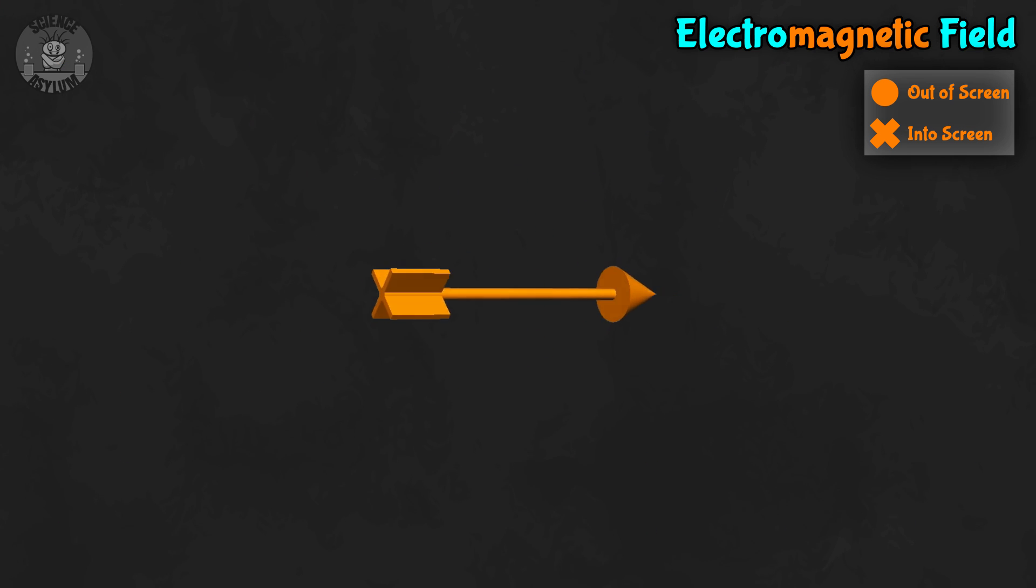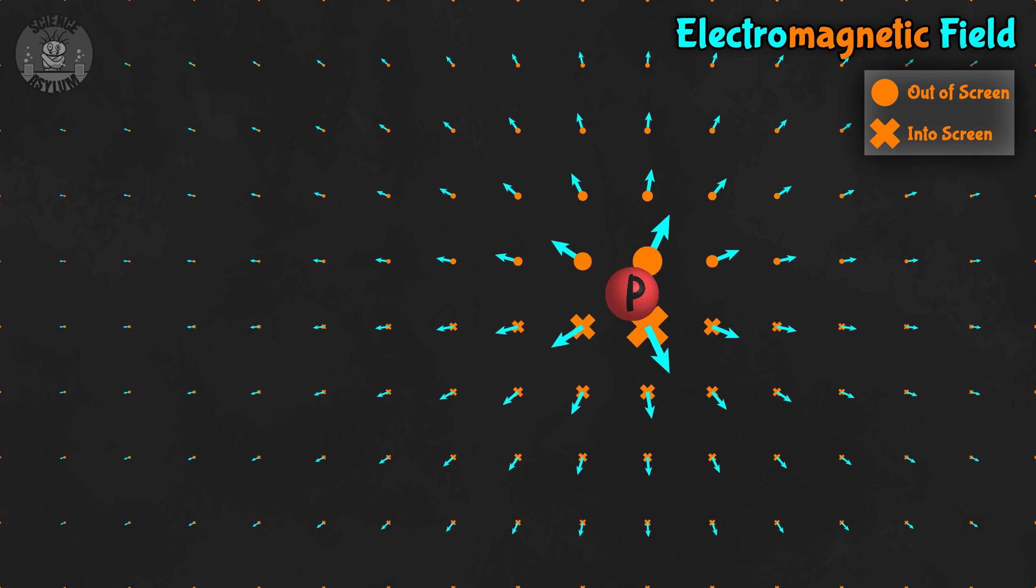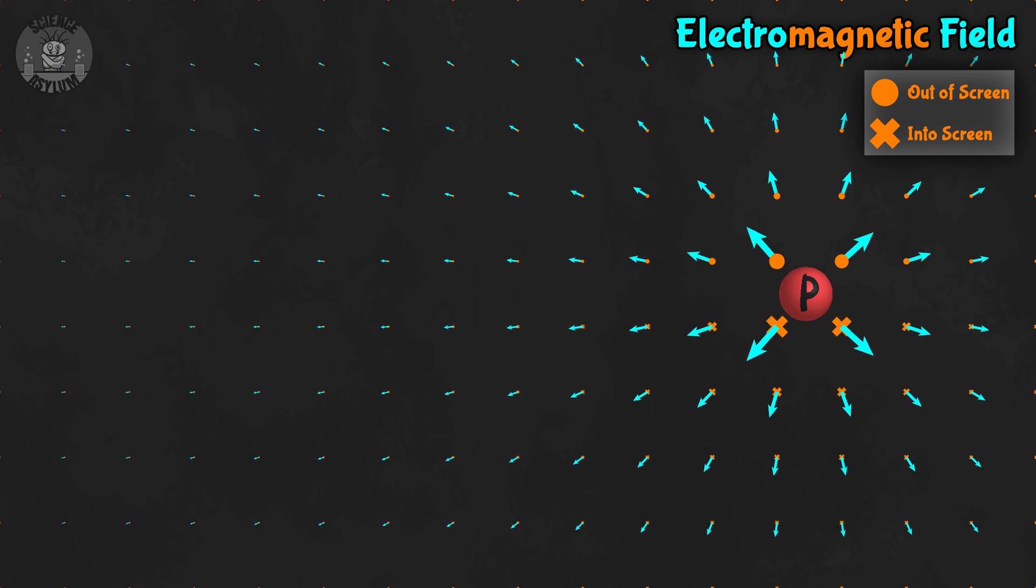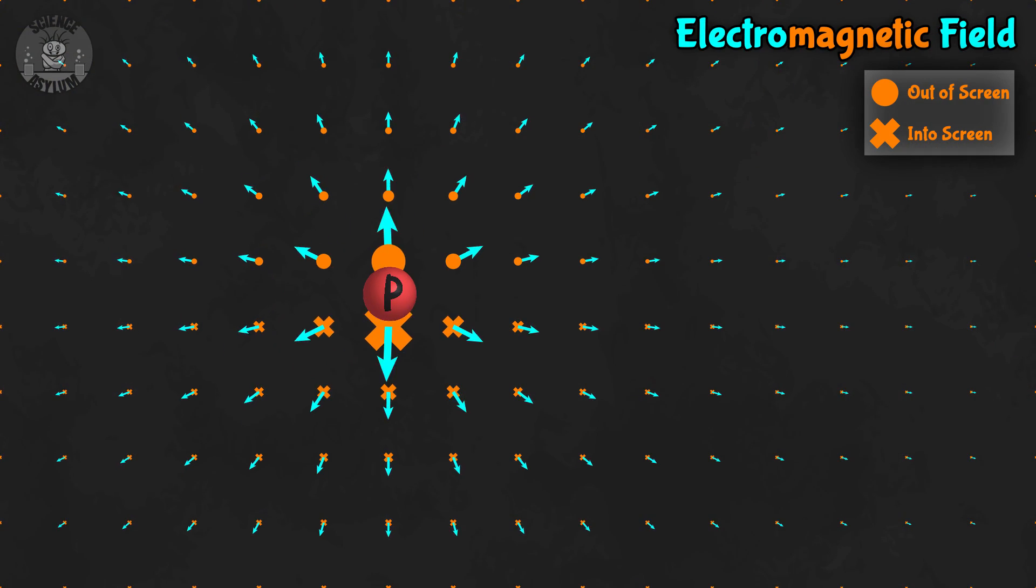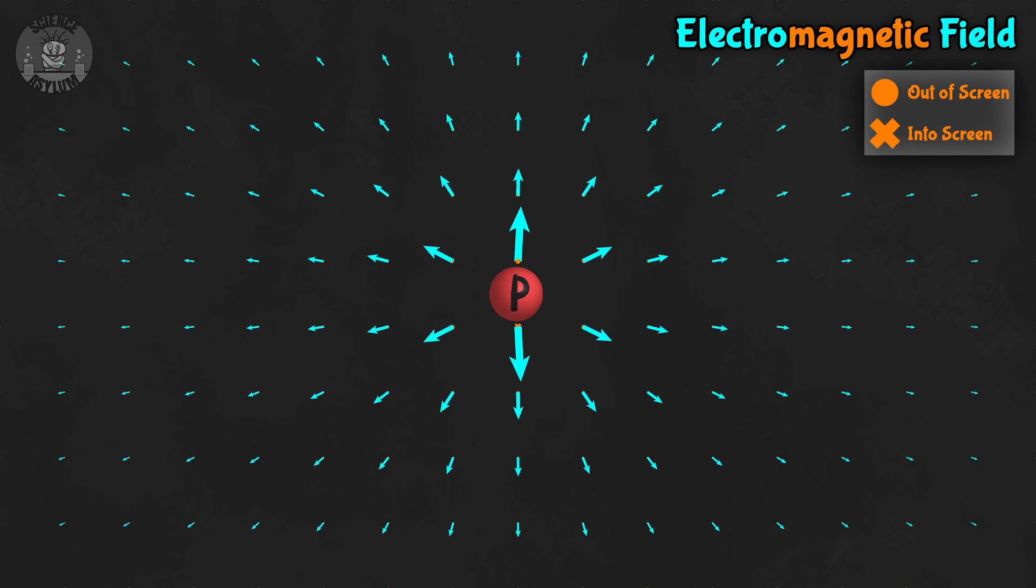The orange X's and dots represent direction into and out of your screen because that's what a simple arrow would look like in each of those cases. We can see the moving proton affects both fields. Historically, though, we don't do experiments with single charge particles. So while this diagram is accurate, it's not very practical.